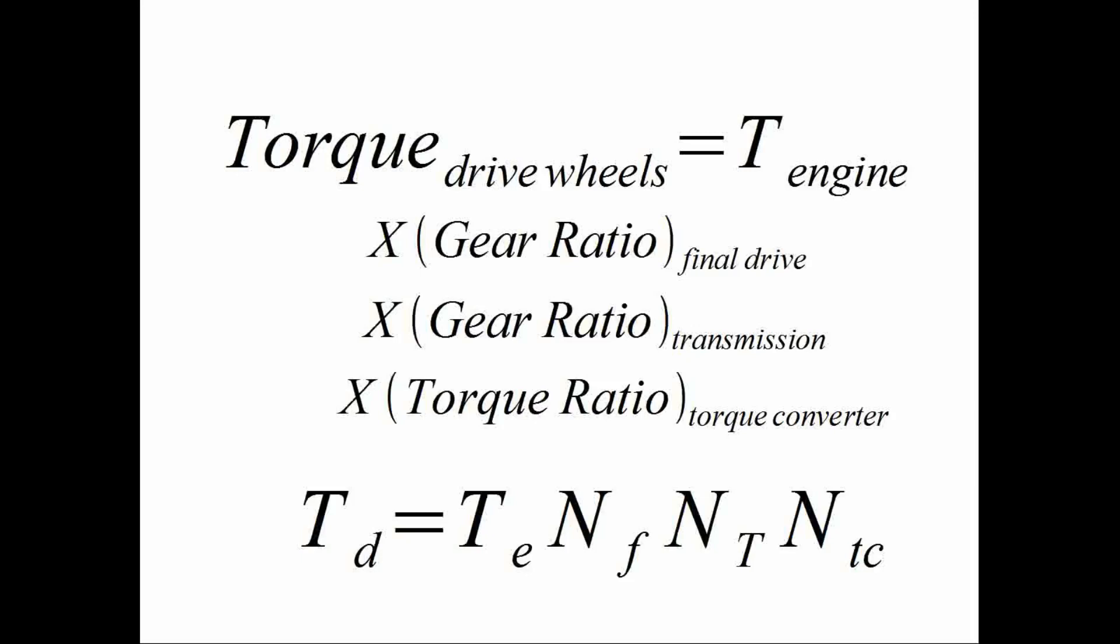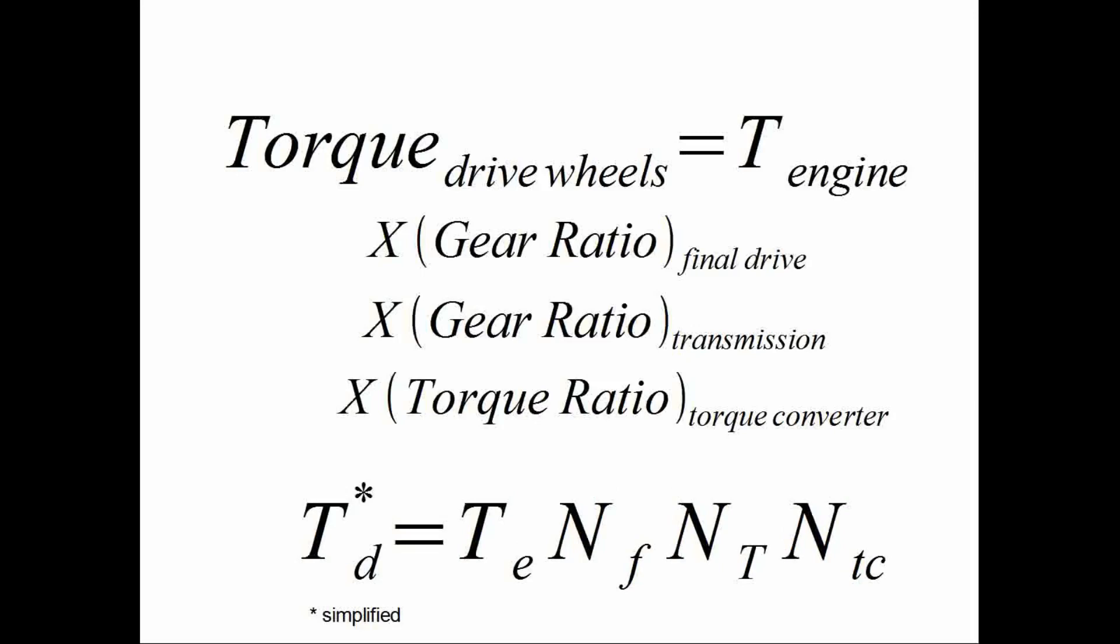Drive wheel torque is engine torque times final drive gear ratio times transmission gear ratio times torque ratio of the torque converter, if you have one. For a manual trans, the torque ratio of the clutch is one. Well, hopefully. So, then we only need to worry about the transmission and rear end gear ratios. And again, this is a simplification because we're not including driveline inefficiencies or inertia effects.